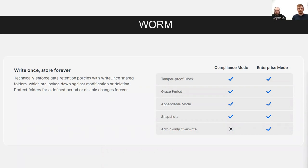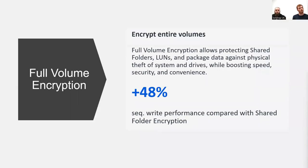There's also an admin-only overwrite function applied in enterprise mode but not compliance mode. In enterprise mode, an administrator with significant privileges can remove a file if it was uploaded in error. In compliance mode, not even a top-level administrator has that access, meaning even if their accounts were compromised, ransomware would not be able to encrypt, remove, or otherwise tamper with the files. We've also added full volume encryption — previously you could encrypt individual file shares, but in 7.2 this is now an option at the volume level.